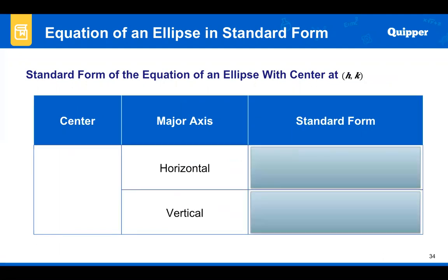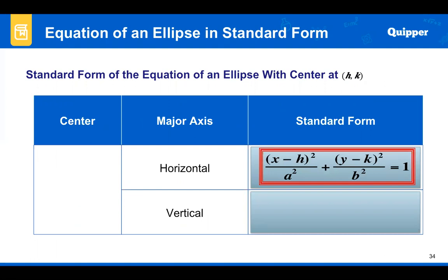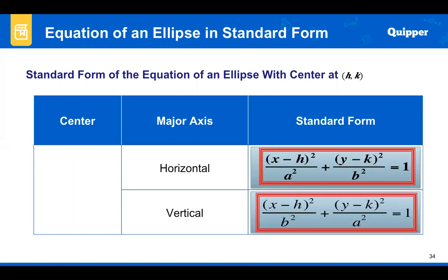For the standard form of the equation of an ellipse with center not at the origin and a horizontal major axis, we have the quantity (x minus h) squared over a squared plus the quantity (y minus k) squared over b squared equals 1. And if the major axis is vertical, the standard form is (x minus h) squared over b squared plus (y minus k) squared over a squared equals 1.